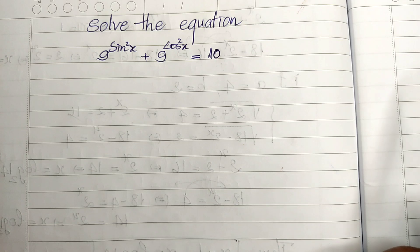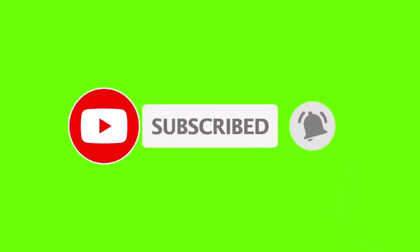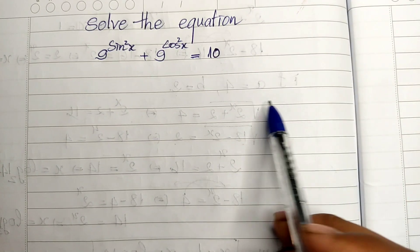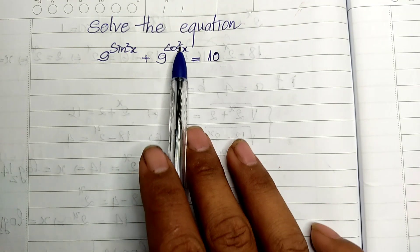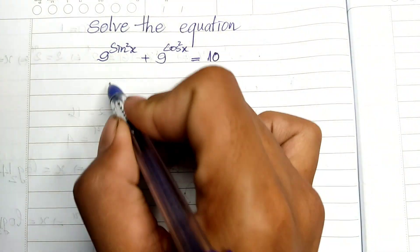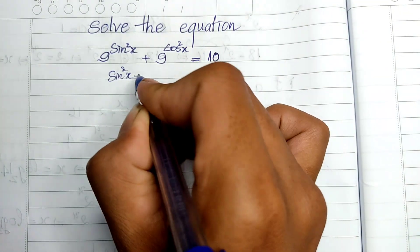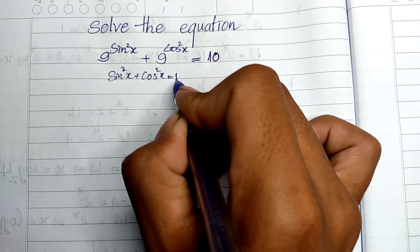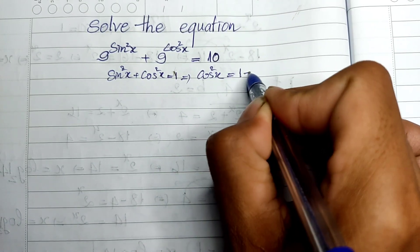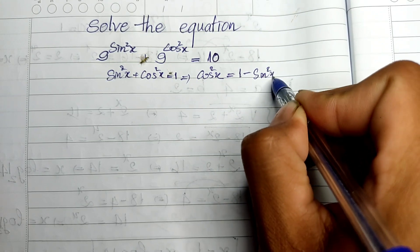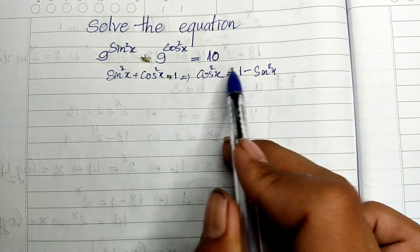Okay, now let's go to the solution together. To solve this equation, I have one trick. We know that sine squared θ plus cosine squared θ equals 1, so we get cosine squared θ equals 1 minus sine squared θ.